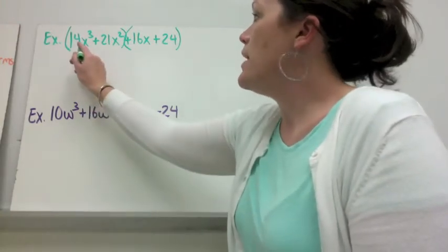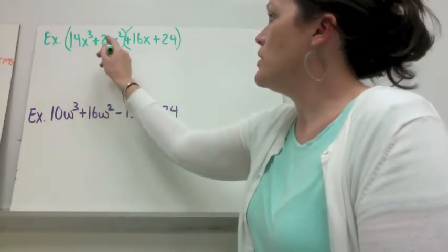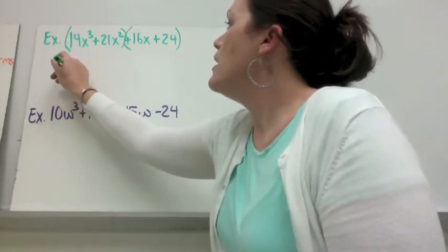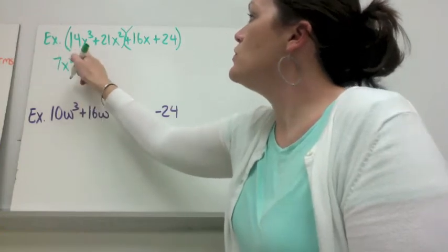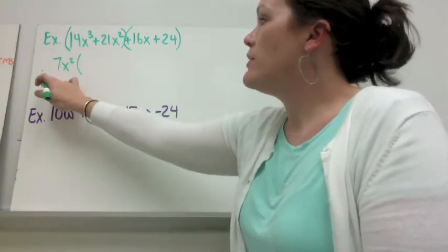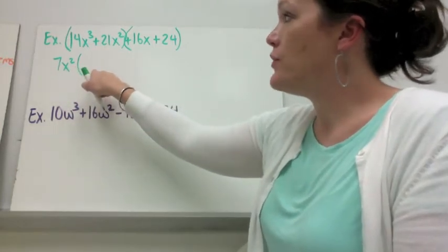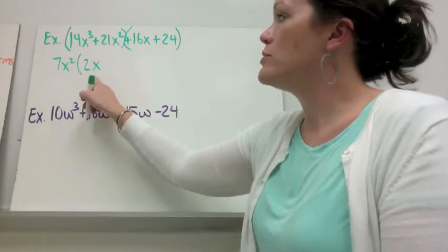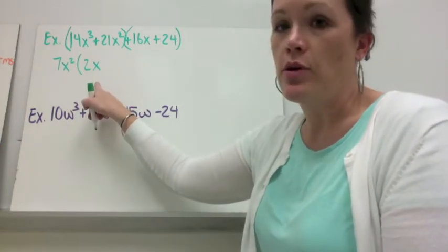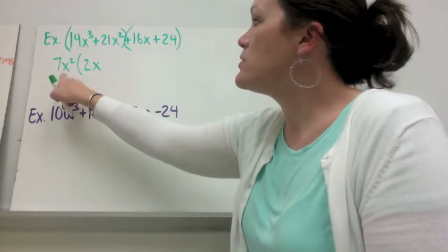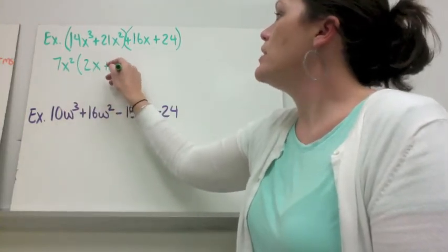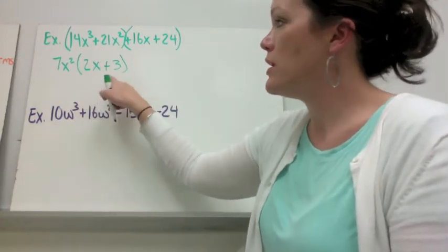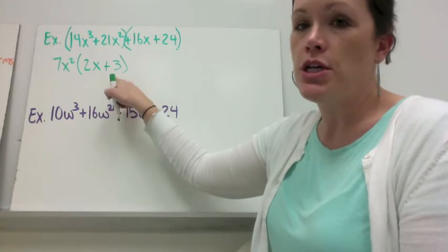So we have 14x cubed and 21x squared. The greatest common factor we could take out would be 7, and then they both have at least two x's. So we'd have 7x squared, and 2x times 7x squared would give me back 14x cubed. And 7x squared times 3 would give me back 21x squared. I'm always checking to make sure that I'm rewriting but not changing what I was given.